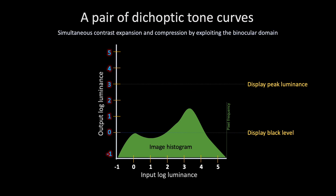For stereoscopic VR displays, which can present a different image to each eye and therefore offer a separate dynamic range budget for the two eyes, we can selectively use lower or higher tone curve slopes to improve image contrast. When fused, the images convey more fine detail in shadows and highlights compared to standard tone mapped images.